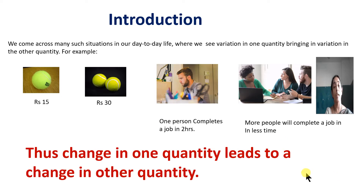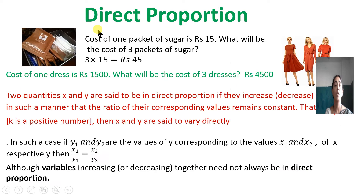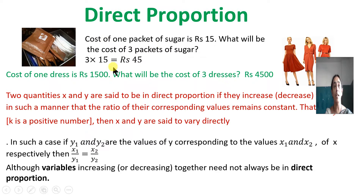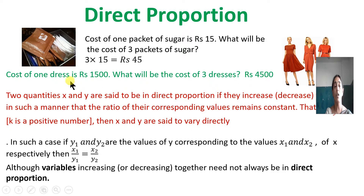Now let's go to direct proportion. The cost of one packet of sugar is rupees 15. Then what will be the cost of three packets of sugar? 3 into 15 is rupees 45. When it was one packet the price was 15, and when it increased to three packets the price also increased. So the increase in one quantity led to the increase in the other quantity. Similarly, the cost of one dress is rupees 1500, and the cost of three dresses is 3 into 1500, which gives rupees 4500. So increase in one quantity leads to increase in the other quantity.